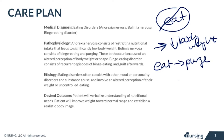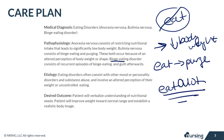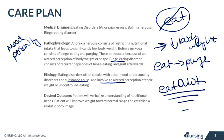Binge eating disorder is a little different — the patient is going to eat a lot, they're not purging afterwards, and they might be larger in size and gain weight. They're going to feel really guilty afterwards. Eating disorders often coexist with other mood disorders, personality disorders, or even substance abuse, and they involve an altered perception of weight or uncontrolled eating.